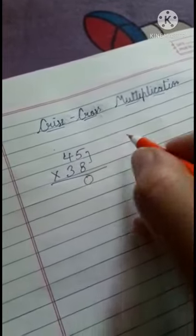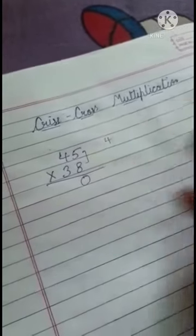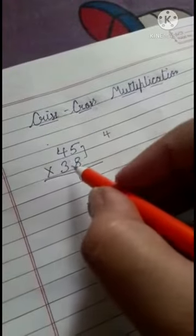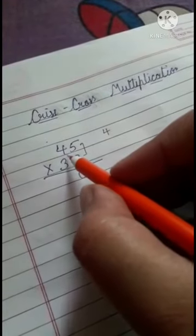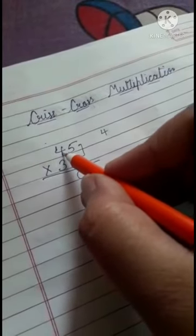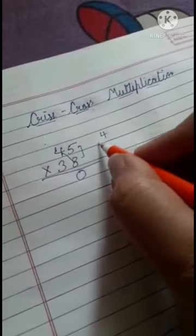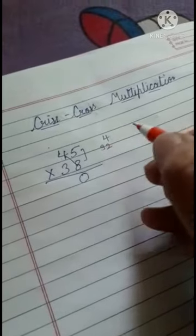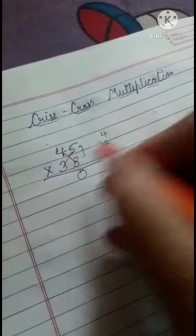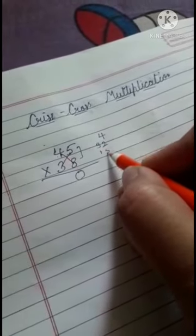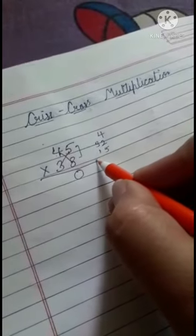Write 0 here and 4 is carry. After that we will do cross multiplication. 8 times 4 is 32, we will write here. 5 times 3 is 15, we will write here. After that, add these three numbers.